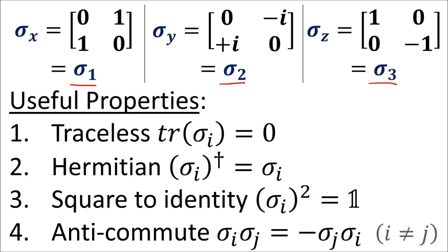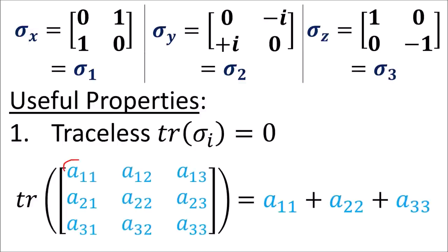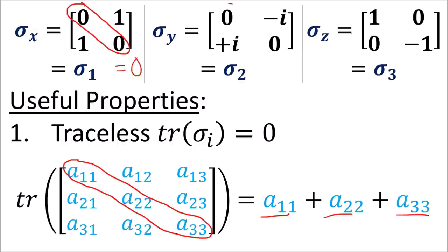Fourth, we can always swap the order of two sigma matrices in a product if we include a negative sign. Another way of saying this is that the sigma matrices anti-commute. The trace of a matrix is just the sum of the elements along the main diagonal. It's pretty easy to see that each sigma matrix has zero trace.